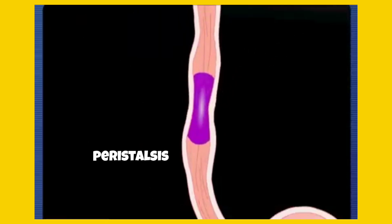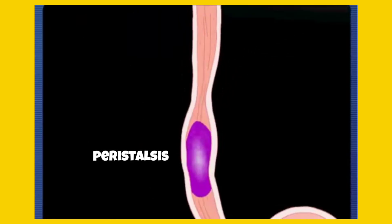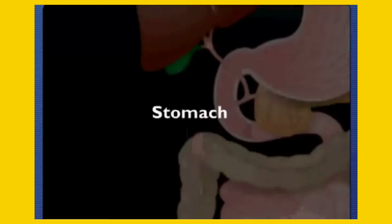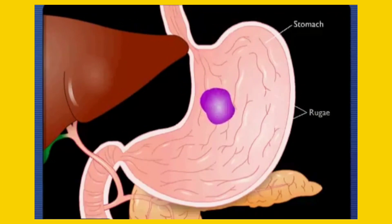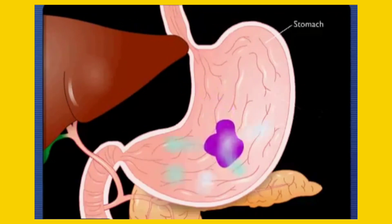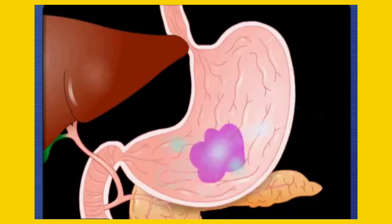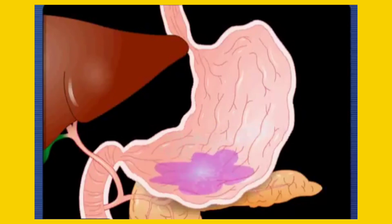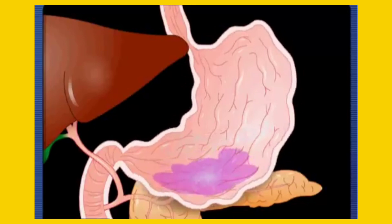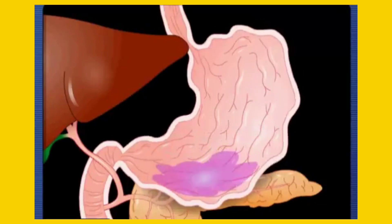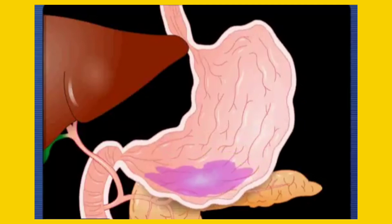The food then enters the esophagus, which connects the pharynx to the stomach. The one-way movement of the food mass — now called the bolus — is controlled by wave-like involuntary muscle contractions known as peristalsis. The bolus enters the stomach, a sac-like muscular organ where churning and mixing take place. Stomach cells secrete hydrochloric acid and other enzymes that chemically digest the bolus.